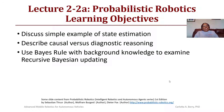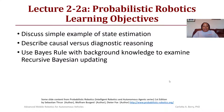Today we will have lecture 2-2a on probabilistic robotics. We will discuss a simple example of state estimation, describe the difference between causal and diagnostic reasoning, and then use Bayes' rule with background knowledge to examine recursive Bayesian updating.